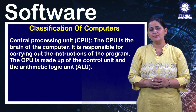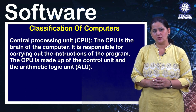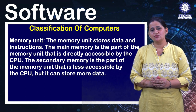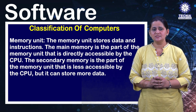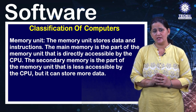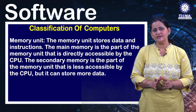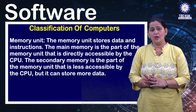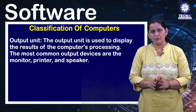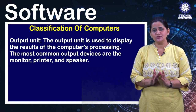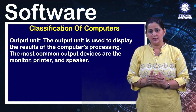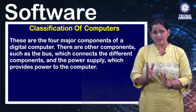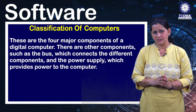The CPU is made up of the control unit and the arithmetic logic unit (ALU). The memory unit stores data and instructions. The main memory is directly accessible by the CPU, while the secondary memory is less accessible but can store more data. The output unit is used to display the results of the computer's processing; the most common output devices are the monitor, printer, and speaker.